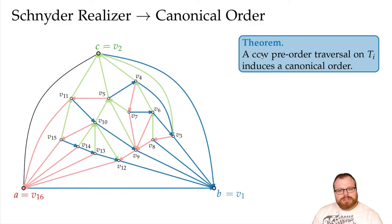You can also choose to go clockwise instead of counterclockwise. So for every Schnyder realizer we have, we can get a bunch of different canonical orders, but we can get at least three different ones.